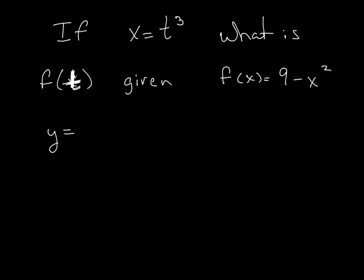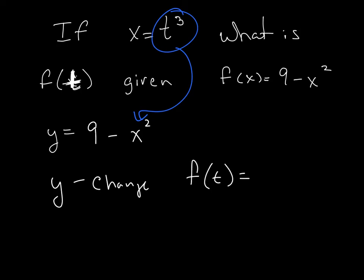So that's the biggest piece, 9 minus x squared. So instead of saying x squared, I write it as... So we don't want to use y anymore. Now we want to change that to f of t equals 9 minus t to the third squared.